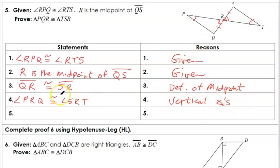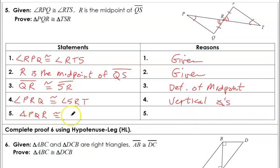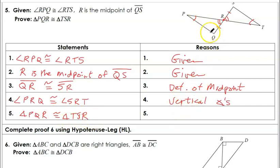Now we have proven that these two triangles are congruent to each other — triangle PQR congruent to triangle TSR — by Angle-Angle-Side.